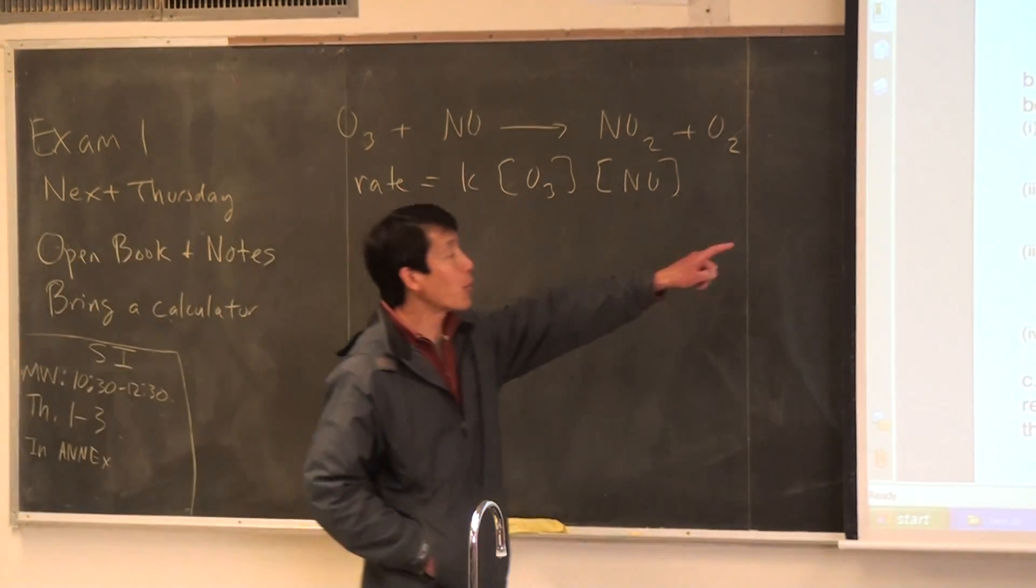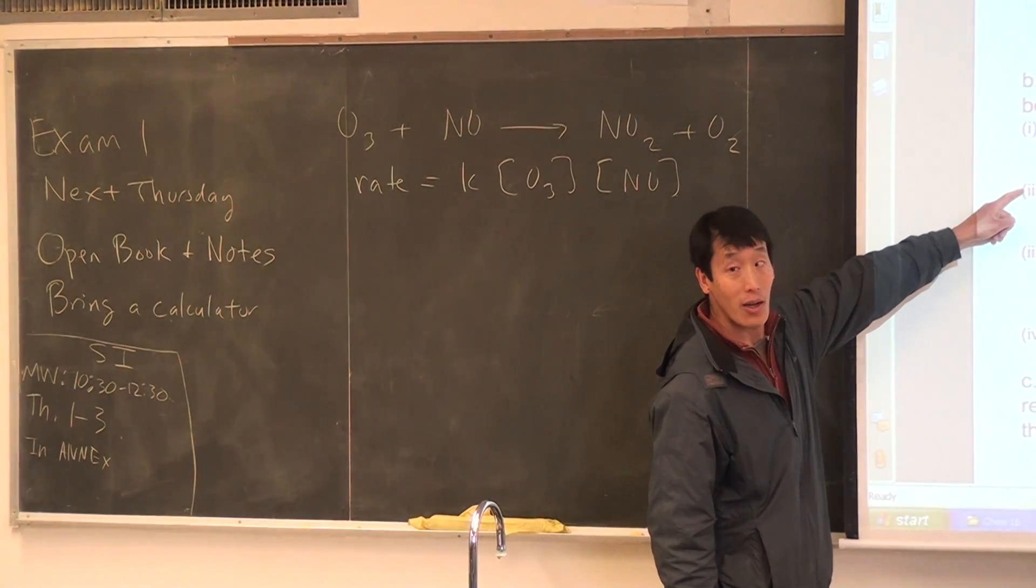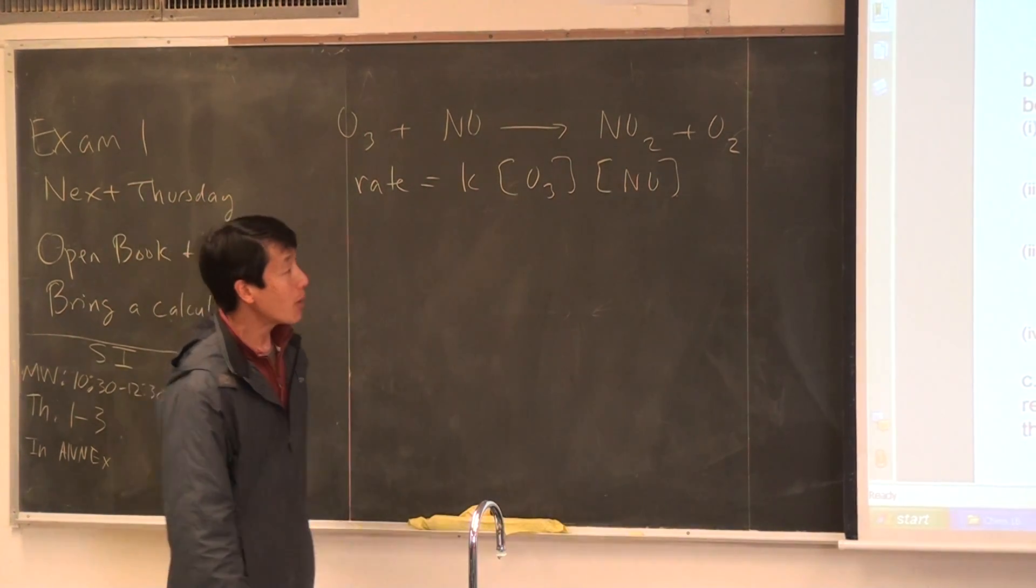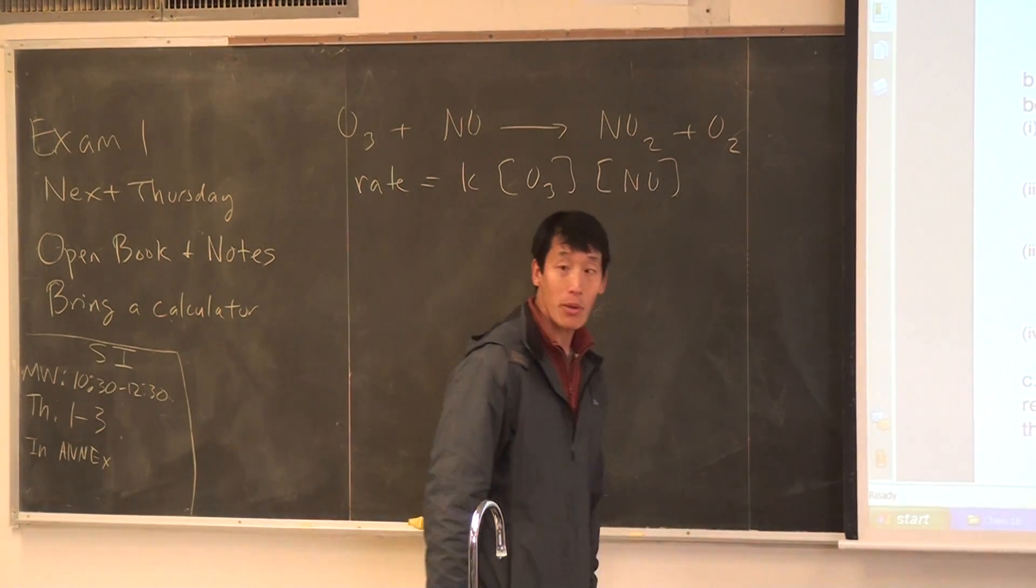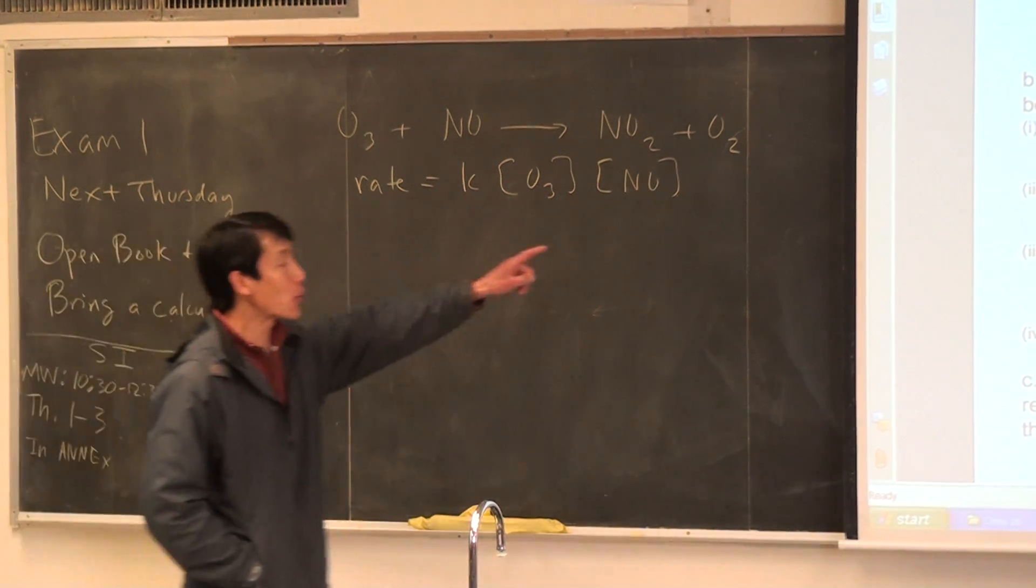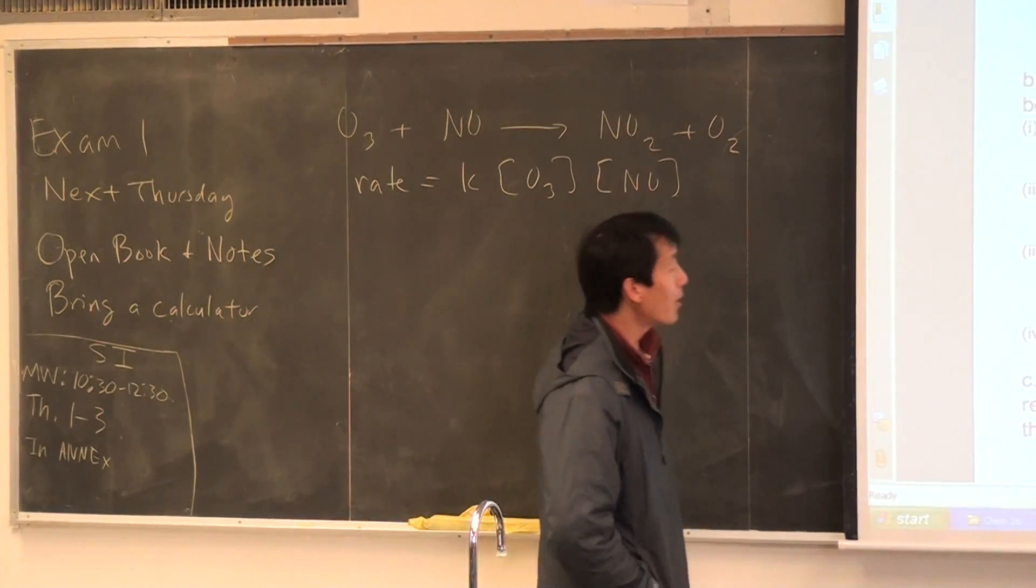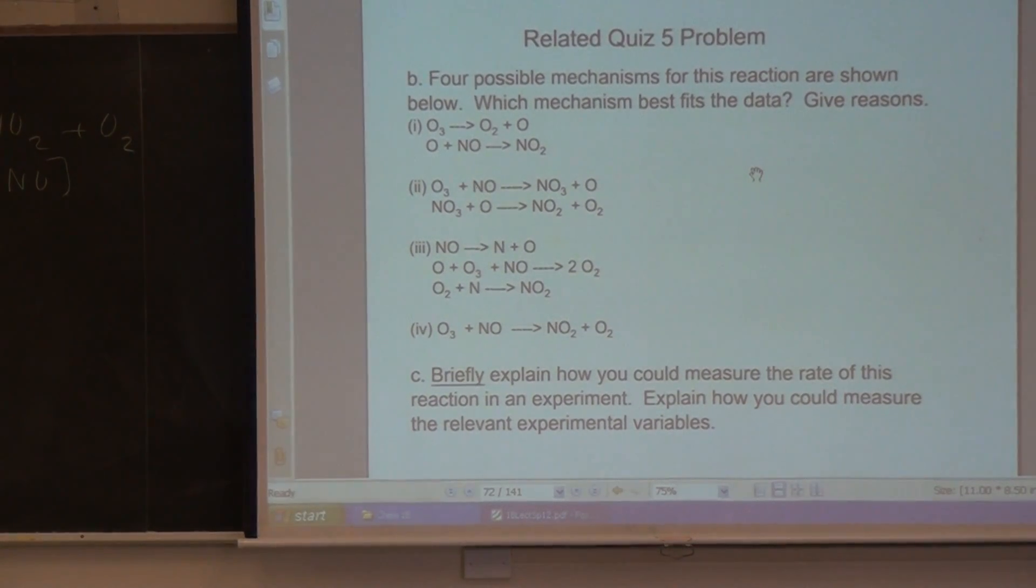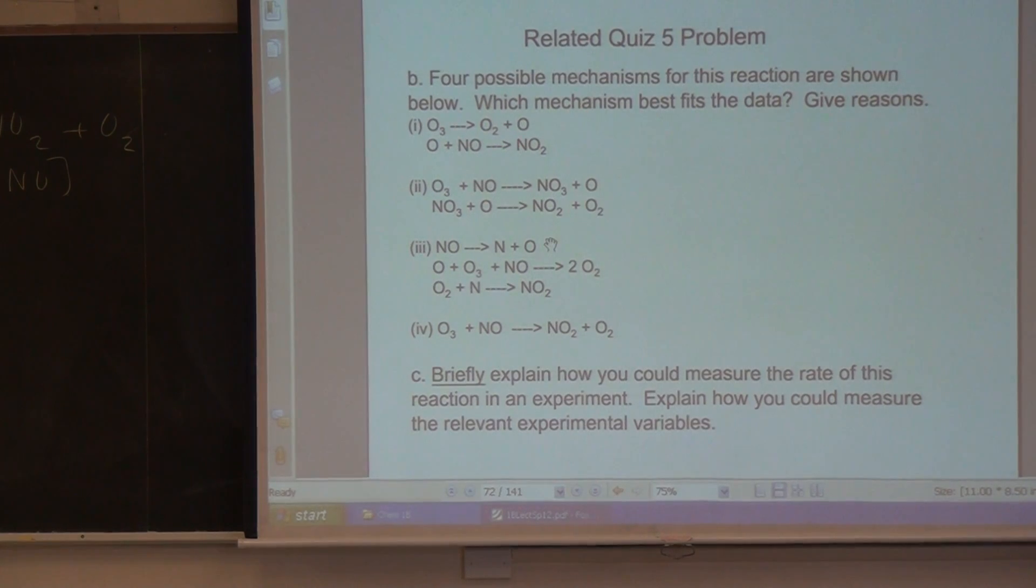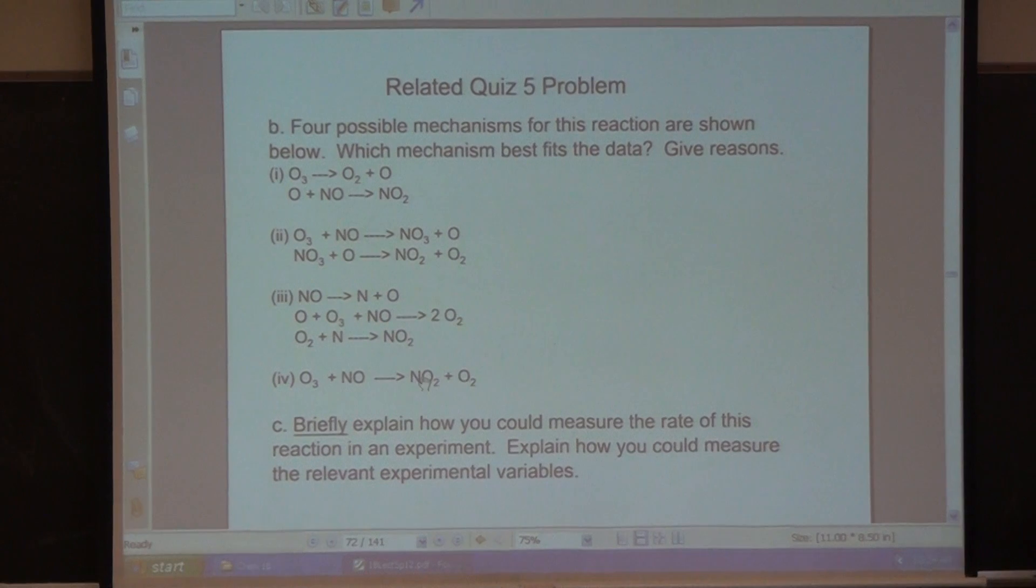So for mechanism two, first step, you have rate equals K times O3 times NO. Does that match the rate law? Yeah. So, note that in this mechanism, which one is going to be the rate determining step? The first step or second step? The first step. It'll be the first step. So mechanism two is a possible mechanism. Look at mechanism three, does that match the rate law? What about mechanism four? Does that match the rate law? Yes. Yes, that matches the rate law too. So, note that mechanism two and four, match the rate law. So, what can we do to figure out which one is the actual mechanism? Yes, like we just said, we want to do an experiment. If we detect either NO3 or oxygen atoms, or if we just...